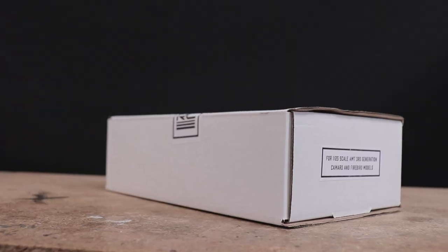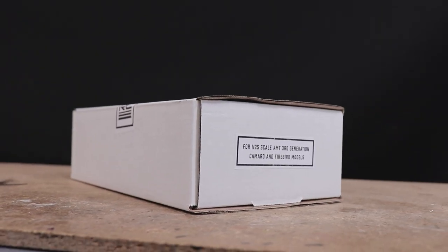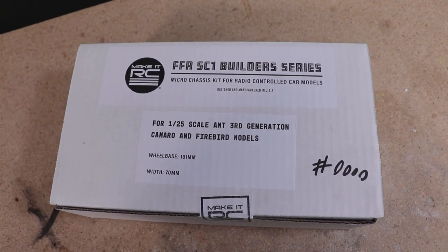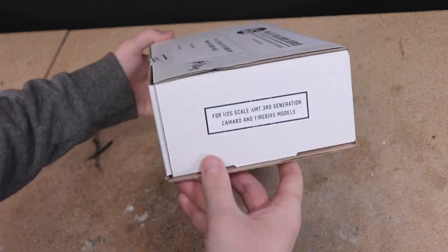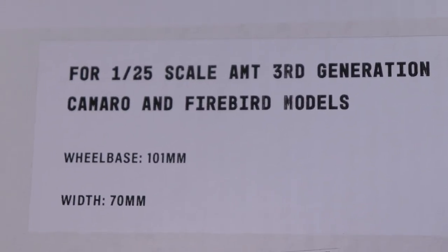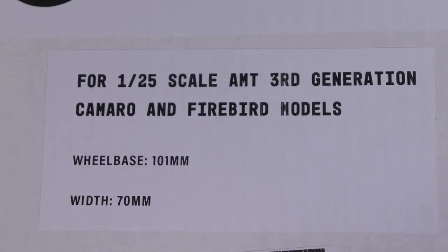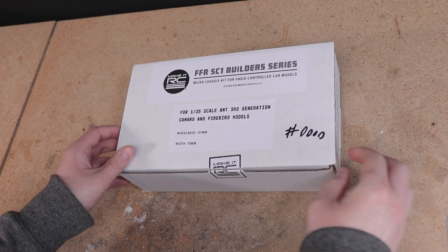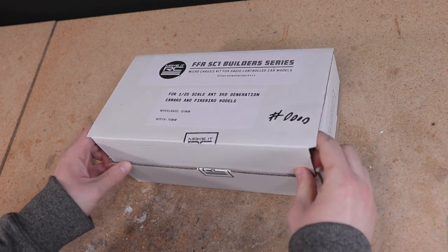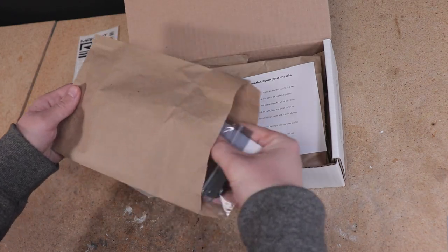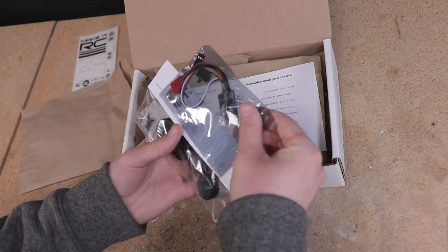Let's talk about this kit more generally now. For one this is a pre-production kit I'm building here so a few things will be different from the one that you'll receive but overall it's the same. Note that the 101 millimeter wheelbase on my kit here is a typo. The chassis will actually have a wheelbase of 102 millimeters which will fit those AMT 1/25th scale Camaro and Firebird kits perfectly. A small detail but if you're wondering why your kit says 102 millimeters unlike mine, that's why.